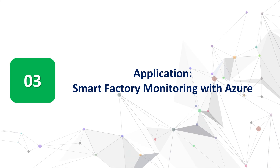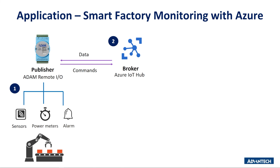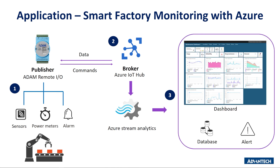Next, let's see an application of ADAM Remote I/O modules connecting with Azure through MQTT in smart factory monitoring. ADAM Remote I/O collects sensor data directly from robot arms on the production lines and forwards the I/O data in the form of MQTT messages to Azure IoT Hub. With the Azure Stream Analytics function, data analysis results can be shown on a dashboard and data can be stored in a database.